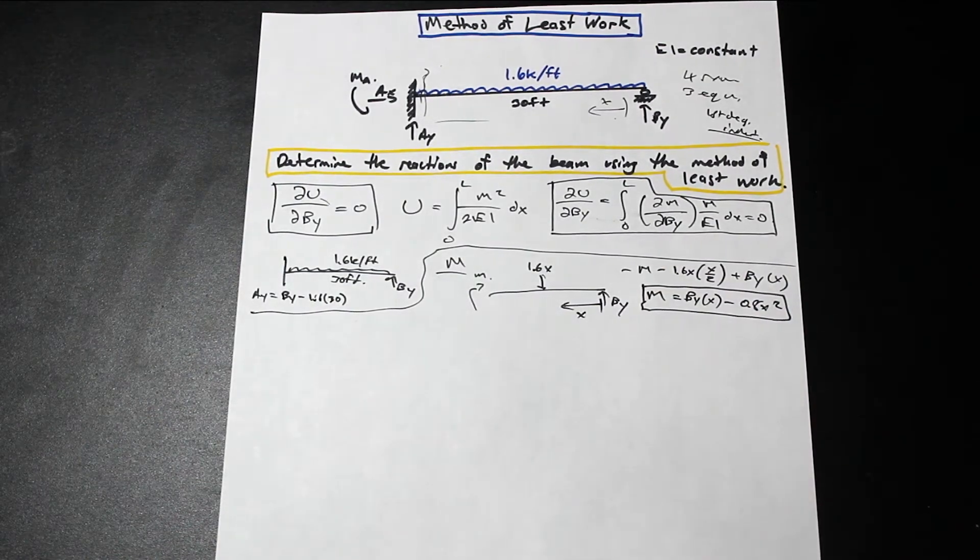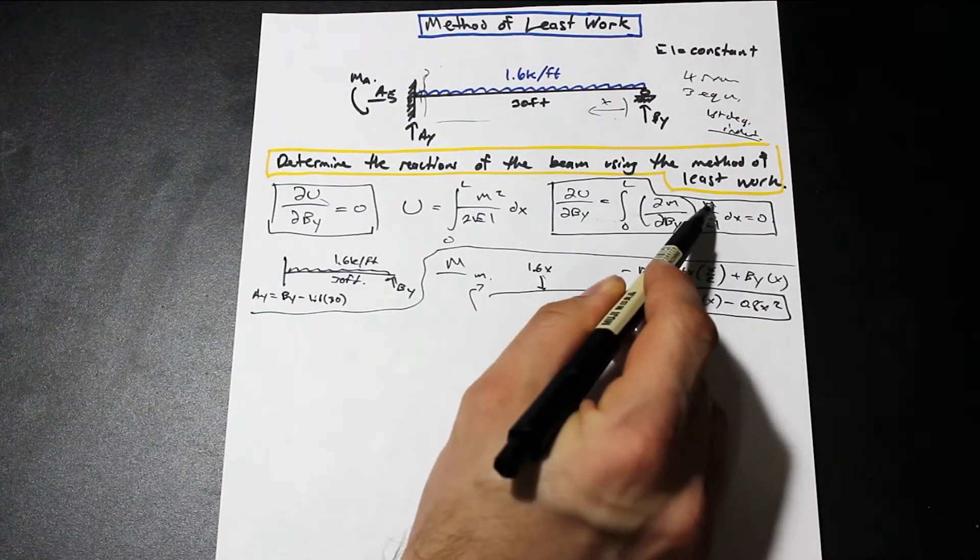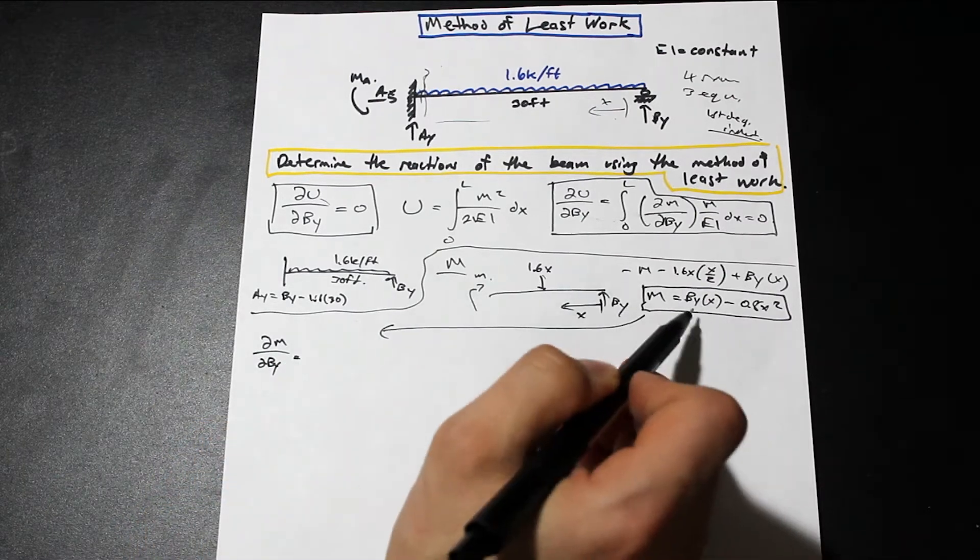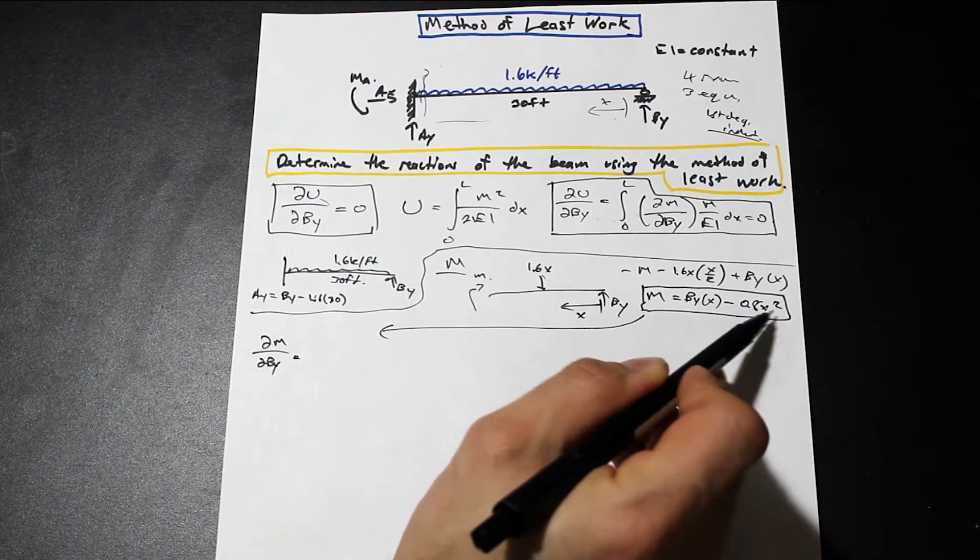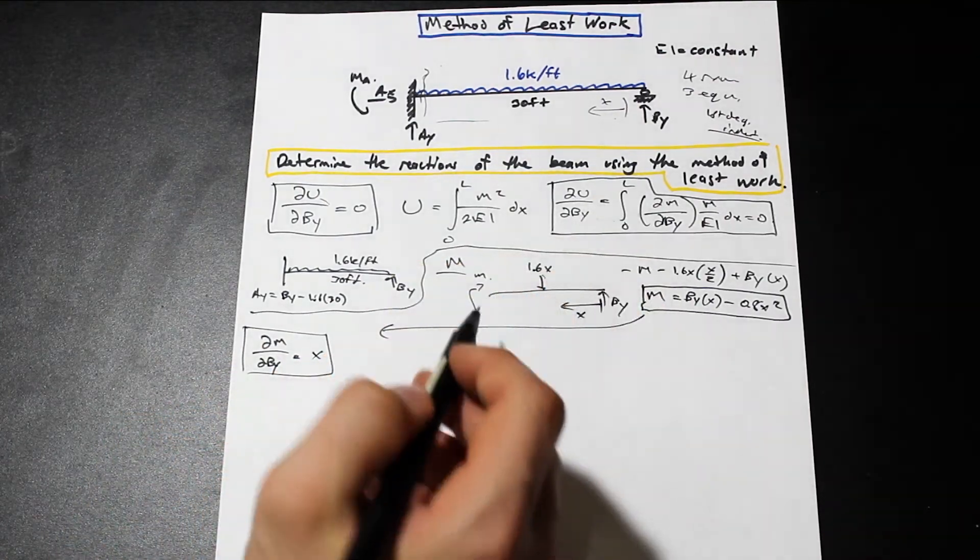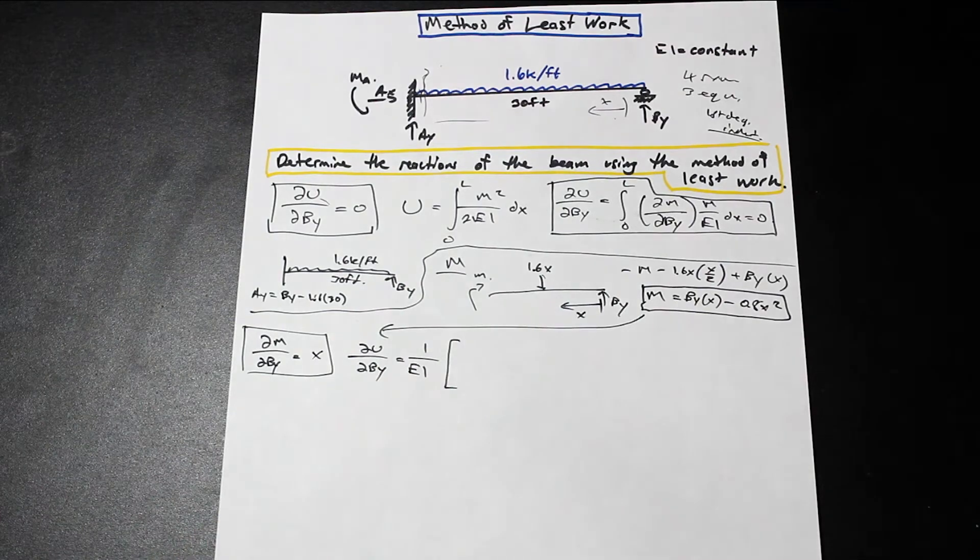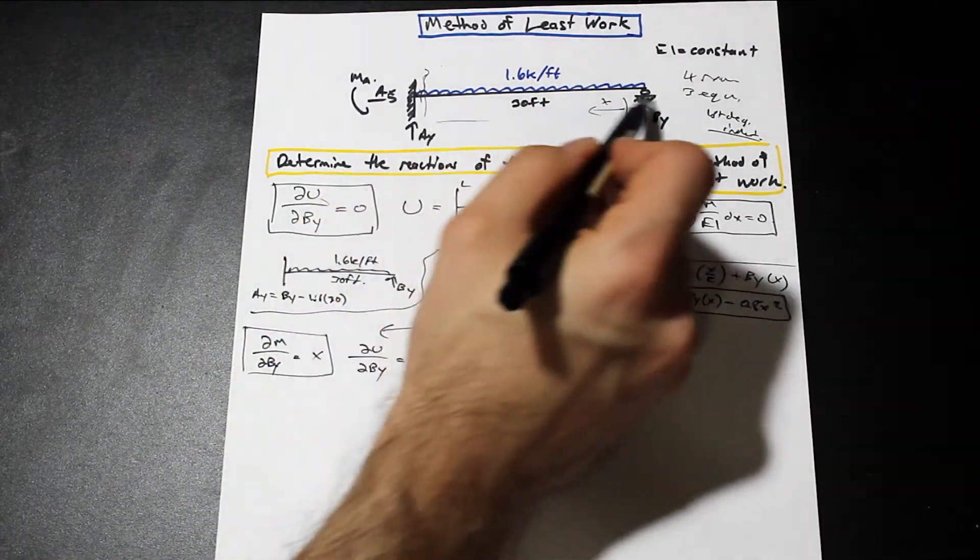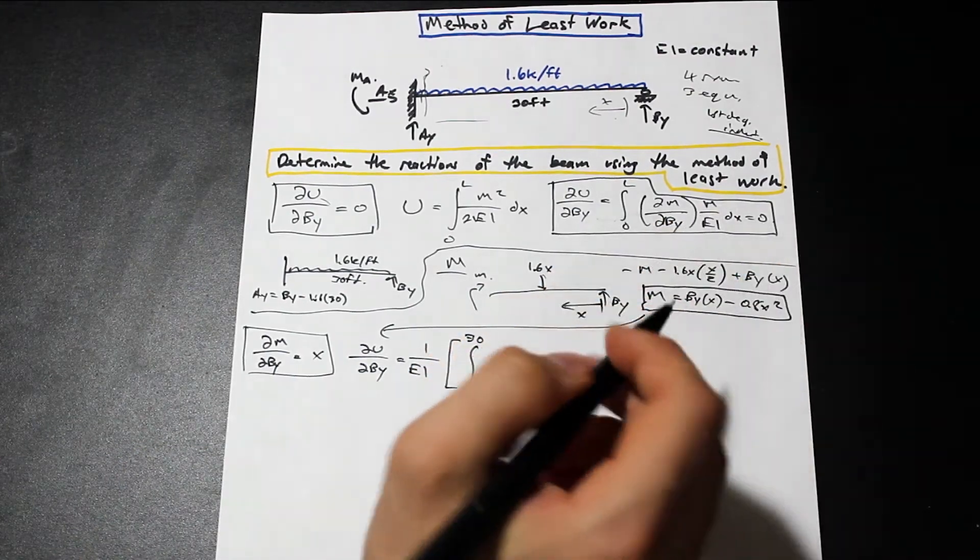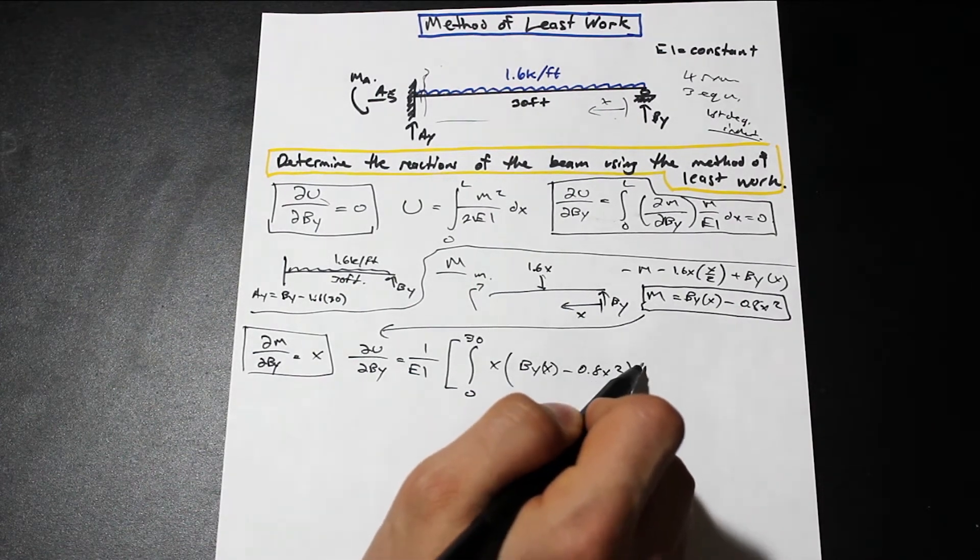So now that we have our expression for M, we're pretty much done here. So all we really need to do is go ahead and find the partial derivative of M with respect to BY. We have M, we have EI, we plug it in, and we integrate. So let's come down here. Our partial M partial BY, BY is our variable here, so X is constant. This is all just constant, so that's going to go away. And our partial M by partial BY is simply X. So let's go ahead and plug in now. So we have partial U by partial BY. Let's take the 1 over EI out of the equation, and let's go ahead and integrate along our bounds for the beam, which is 0 to 30. And now we have our partial M by partial BY, which is just X, and we have M over EI. EI we already took out. M is simply BYX minus 0.8 X squared. Perfect.